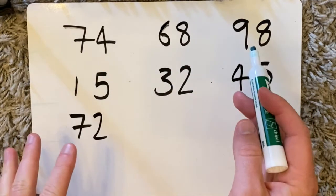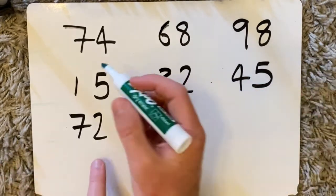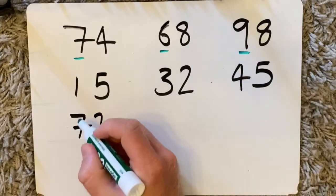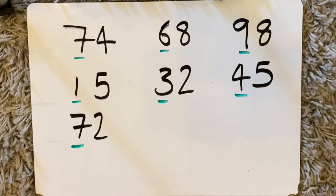So first I'm going to go through all these numbers and I'm going to highlight all the numbers that are in the tens column. So here I have 70, 60, 90, 10, 30, 40 and 70.